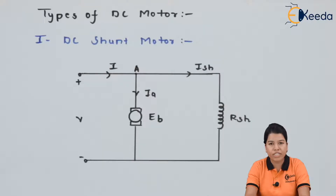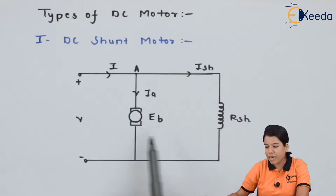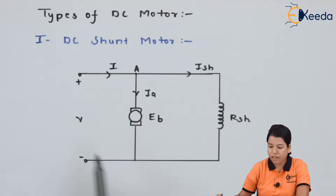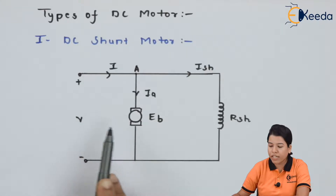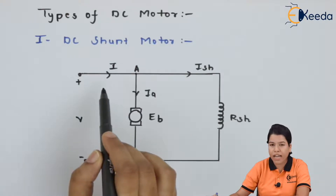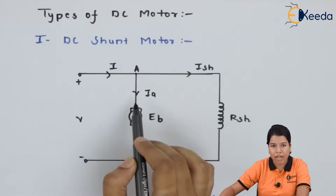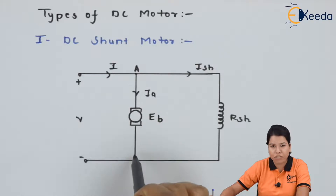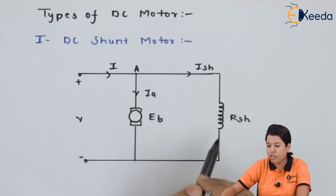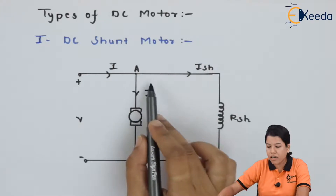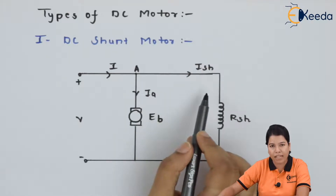The circuit diagram for DC shunt motor is as shown in figure. The field winding is connected parallel to the armature winding. This type of arrangement is called a DC shunt motor. The supply voltage V is given to the input side. The current I starts to flow, and at point A, this current gets divided into two paths. Part of current I flows through the armature winding and the remaining part flows through the field winding. The armature current is denoted by Ia and the field winding current is denoted by Ish.